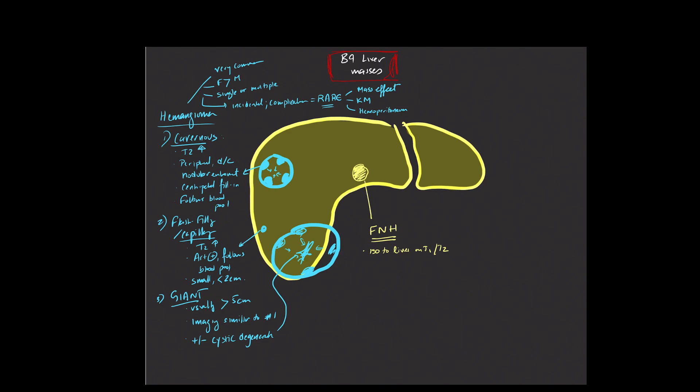Now on occasion, and it's been quoted from 30% to 60% in the literature, you may end up seeing a central scar, and that scar region is T2 hyper-intense and that's sort of different from the remainder of the parenchyma. So you may end up seeing that in a subset of patients with focal nodular hyperplasia.